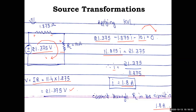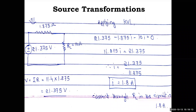Source transformation is the new method here; the remaining concepts — resistances in parallel, current sources in parallel, KVL, Ohm's law — were learned earlier. Go through the steps once more and note them in your notebook, as writing helps clarify understanding. We will now see one more problem on source conversion.